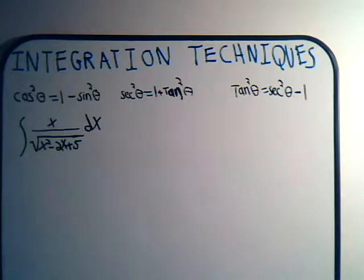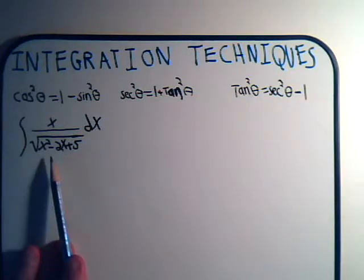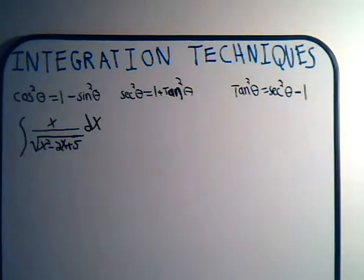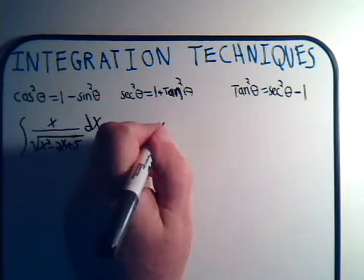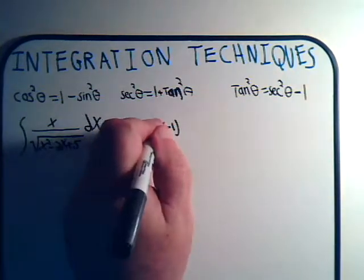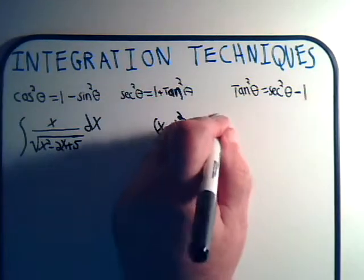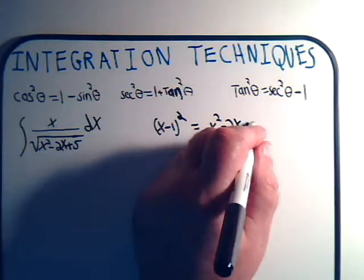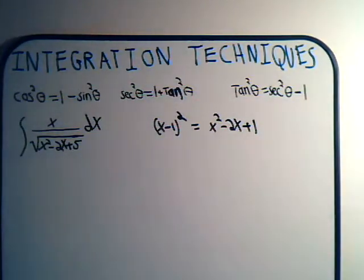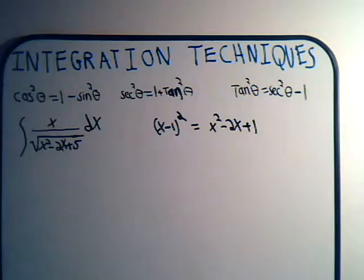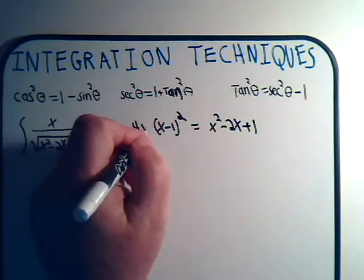The whole trick when we face this kind of situation is to try to do a complete-the-squares operation. We take this coefficient of the x term and divide it by 2, so we write x minus 1 squared. This equals x squared minus 2x plus 1. And clearly if we add 4 to this side, that gives us x squared minus 2x plus 5. So that's what we're going to do.